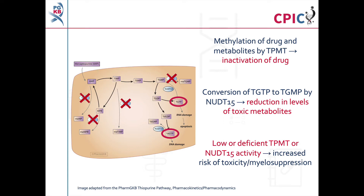If a patient has low or deficient TPMT activity, more molecules are available for conversion into active thioguanine nucleotide metabolites. This puts the patient at an increased risk of severe or fatal toxicity and at an increased risk of myelosuppression. It should be noted that some adverse reactions to thiopurine treatment, including pancreatitis and hepatotoxicity, are not linked to TPMT activity.